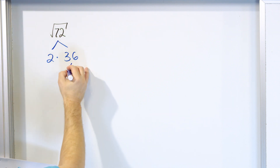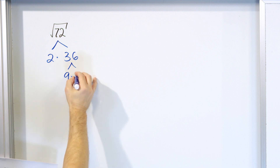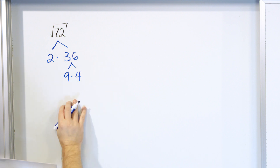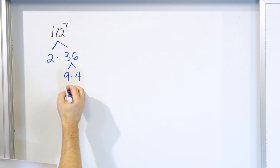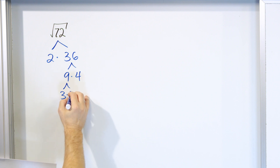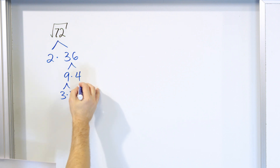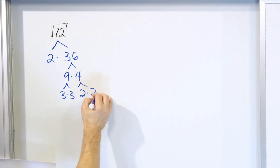Now 36 — I know that 9 times 4 is 36. And for 9, I know 3 times 3 is 9. And for 4, I know that 2 times 2 is 4.